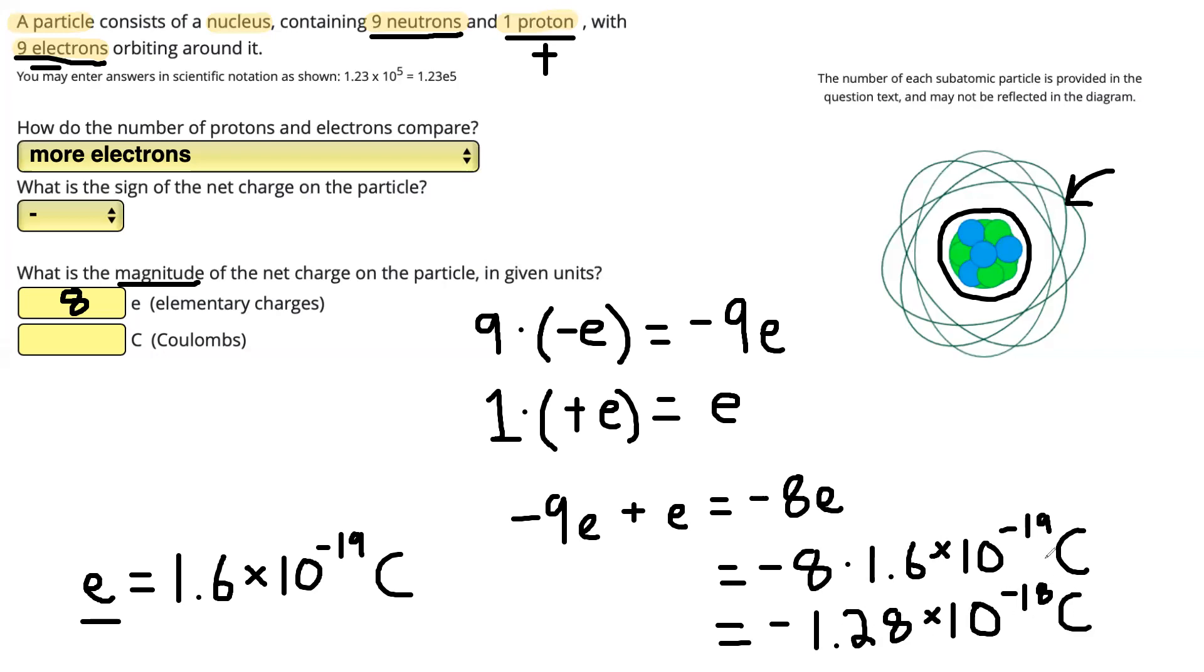So that's our charge on our particle overall. Again, it asks for the magnitude so we don't need to include the negative sign when we type this in. 1.28 times 10 to the negative 18.